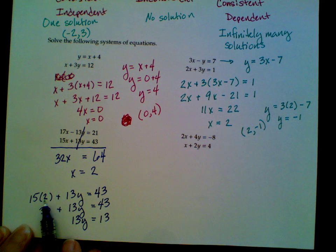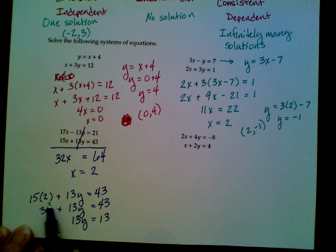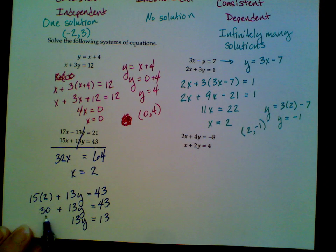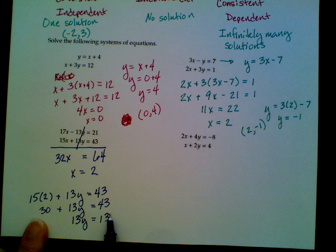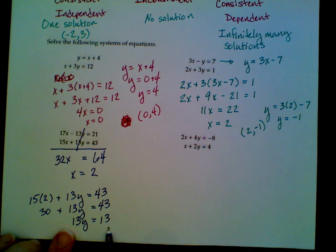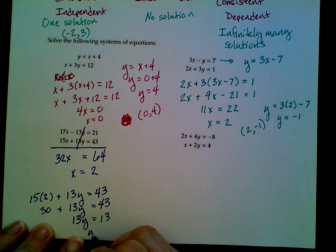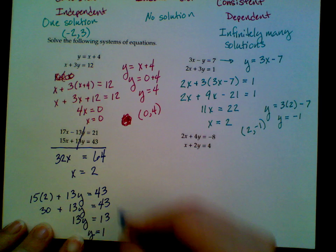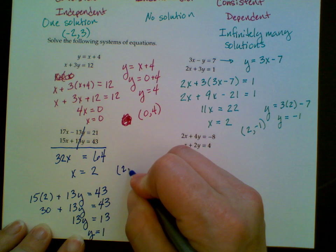As you can see, I substituted in to the 15x plus 13y equals 43. I multiplied 15 times 2 to get 30, and then subtracted 30 from both sides, ended up with 13y equals 13. If I divide both sides by 13, I get y equals 1. So the solution to this system is the point 2 comma 1.